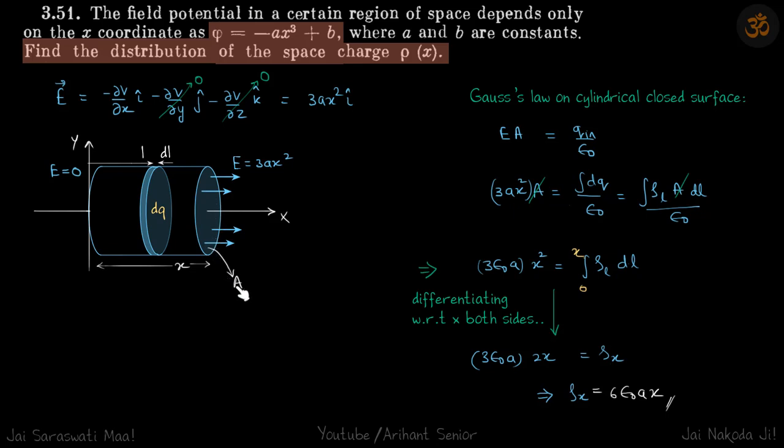Let's say the area of this cross section is A. So using Gauss's law we can write E·A = q_in/ε₀, and we are not taking the electric field on this side because it is zero.